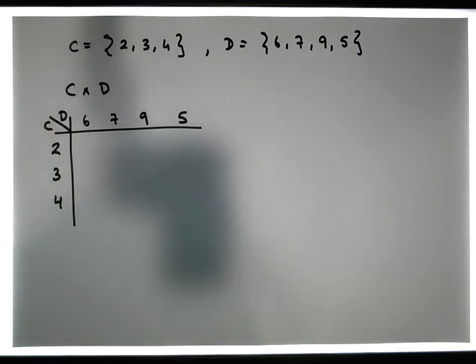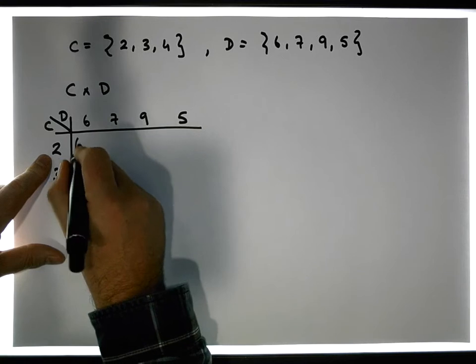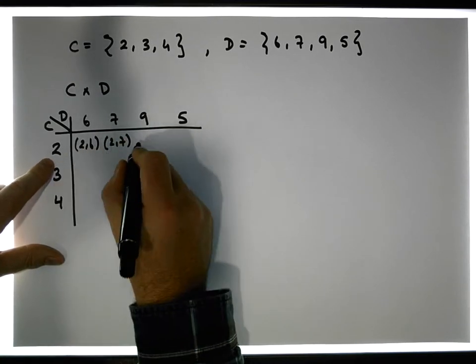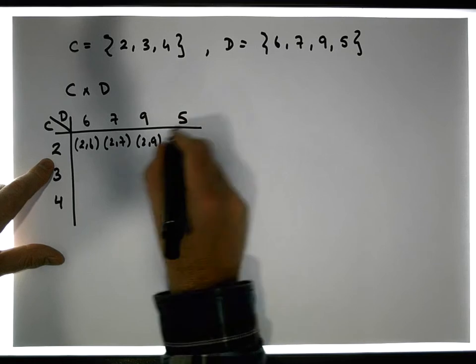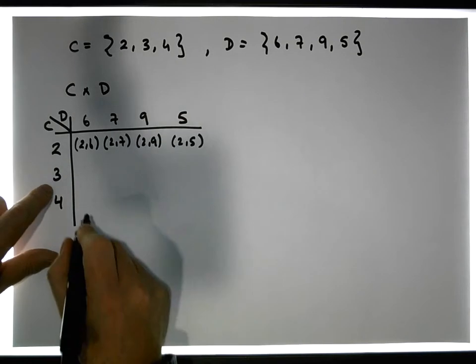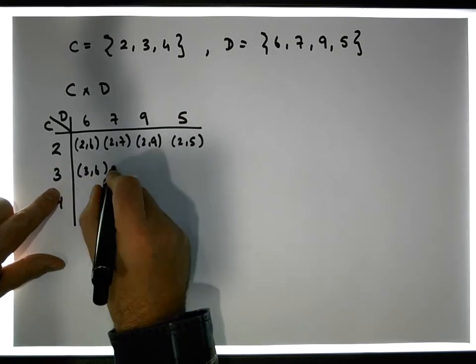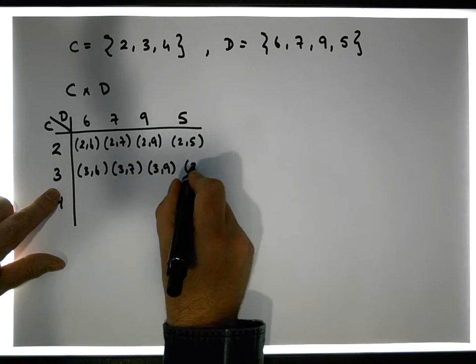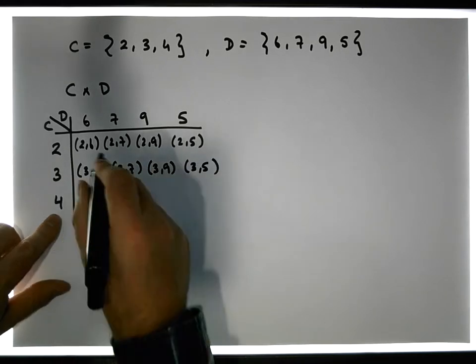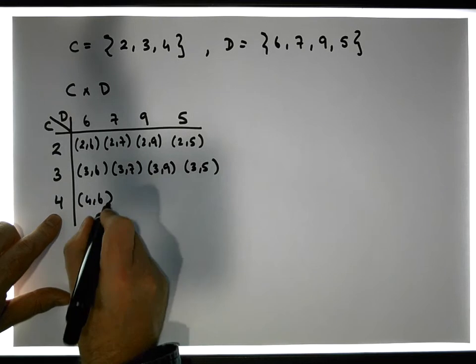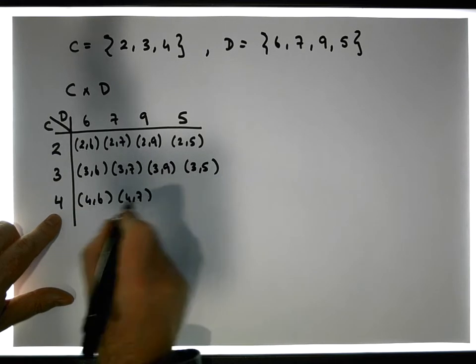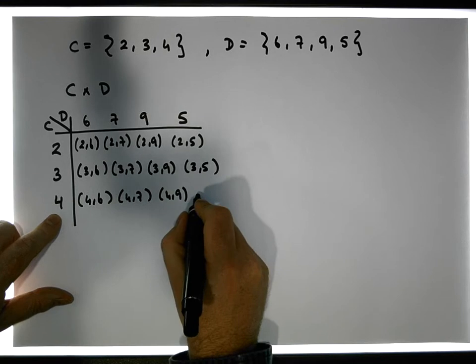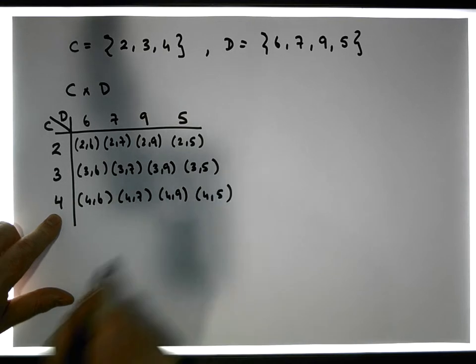And let's construct the ordered pairs. So 2 gets paired with a 6, 2 with a 6, 2 with a 7, 2 gets paired with a 9, 2 gets paired with a 5. 3 gets paired with a 6, 3 with a 7, 3 with a 9, 3 with a 5, and 4 gets paired with a 6, 4 with a 7, 4 with a 9, and 4 with a 5.